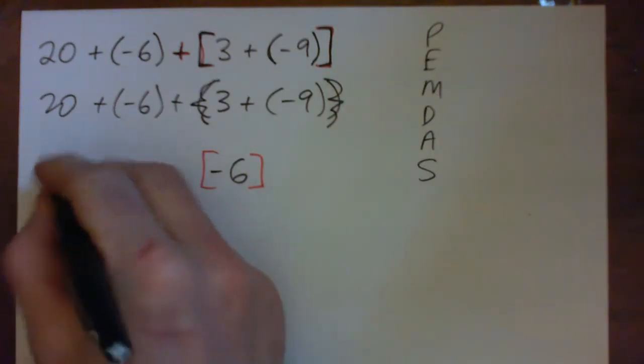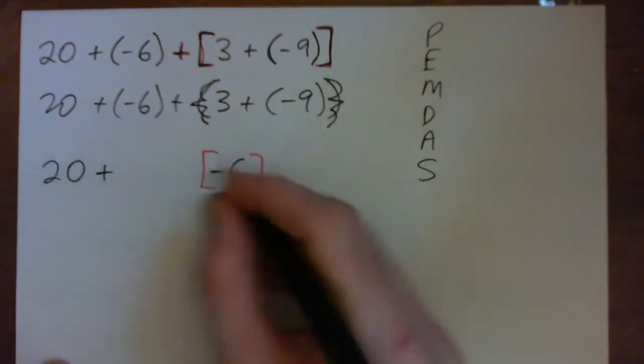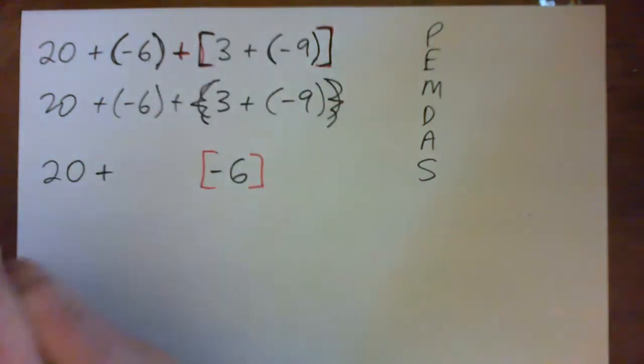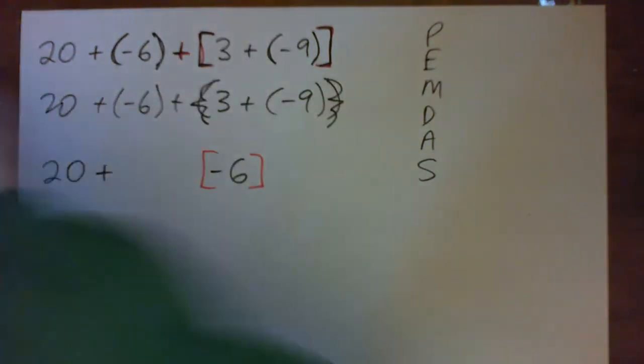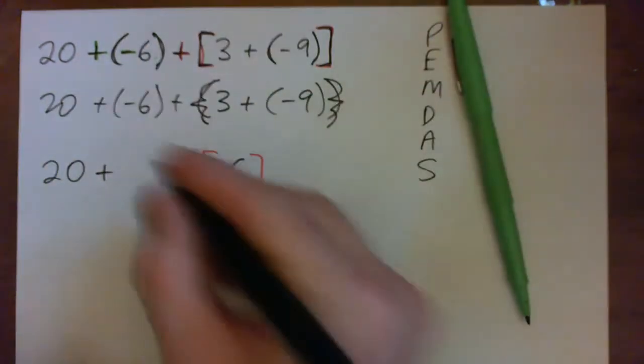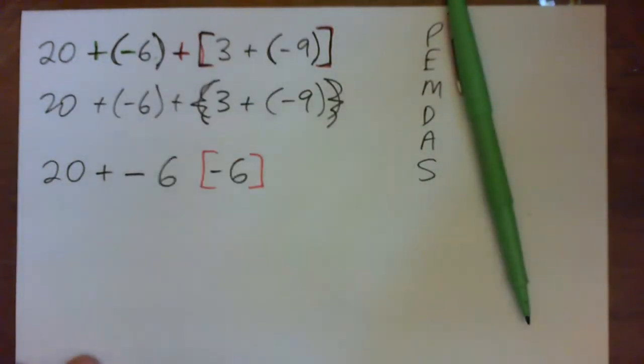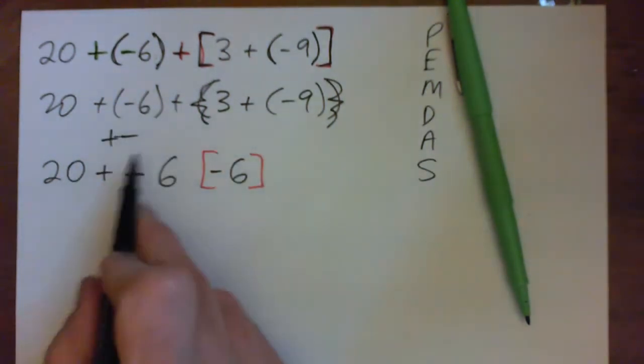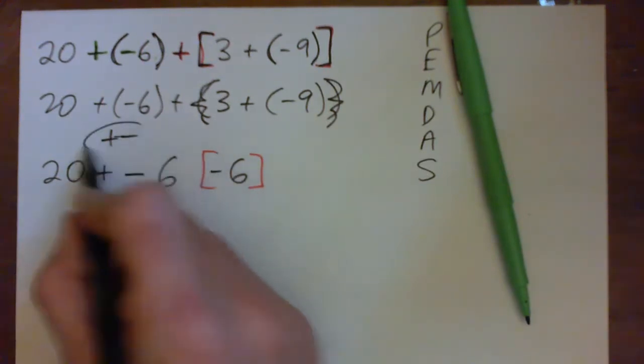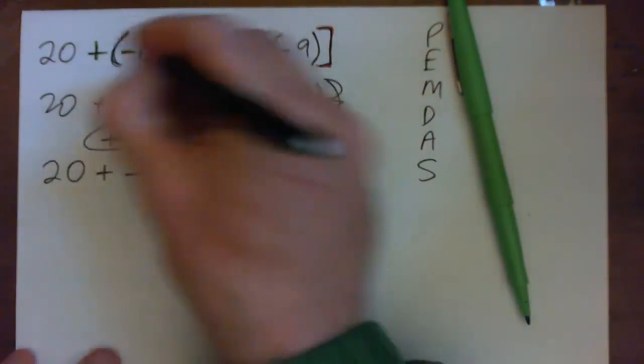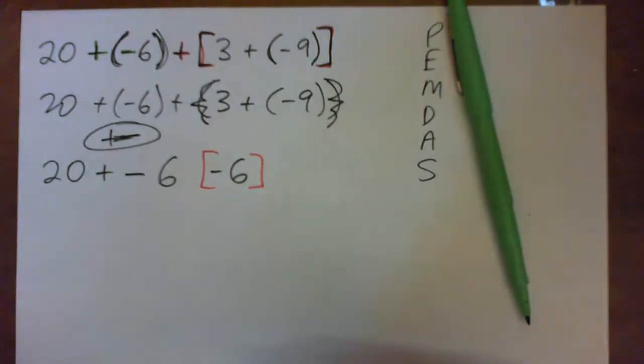So we have 20 plus negative 6. And by the way, these parentheses are actually not necessary, because they're just separating the signs. They're separating the plus sign from the negative sign. So we don't even need them. Just make sure you don't write plus minus where your plus and your minus join up to be one weird plus sign with a long arm. That's the only reason for these parentheses.